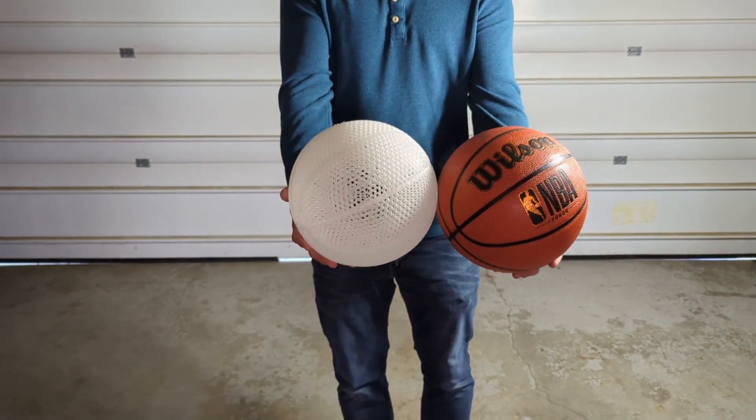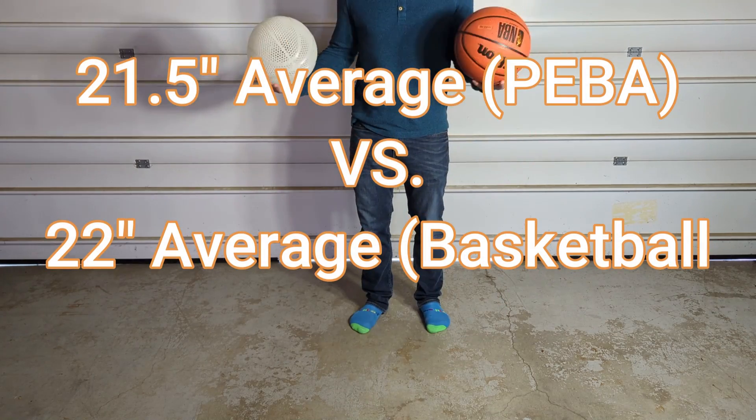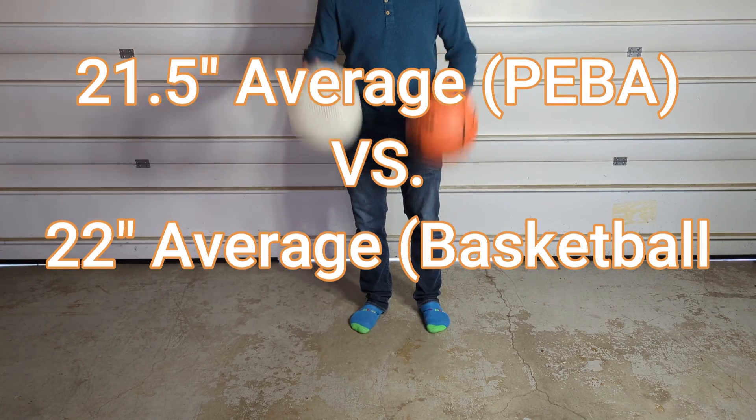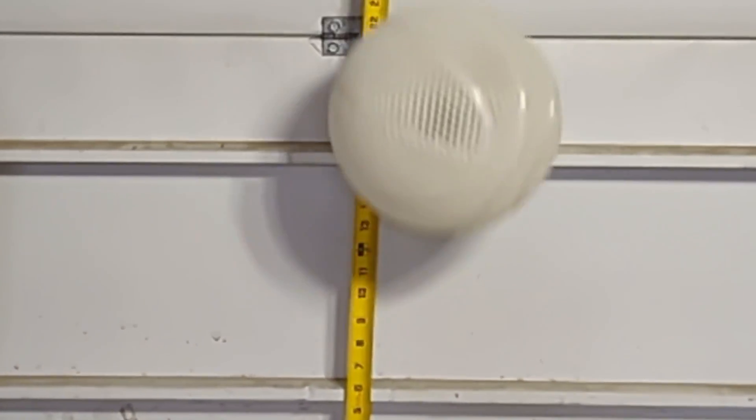So given the averages of the numbers used for our non-NBA rated basketball compared to our PEBA filament basketball, it looks like the regular basketball had a higher bounce by at least a half an inch just on this flawed experiment that I decided to try for fun.